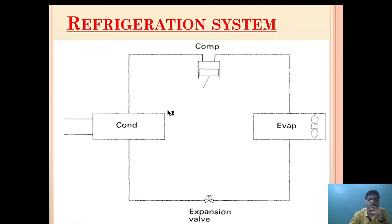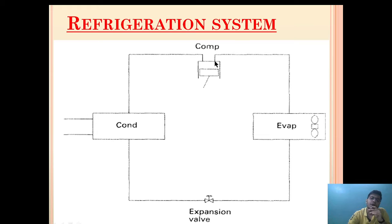We need to understand the basic concept. The whole refrigeration system is in a closed cycle. The refrigerant vapor coming out from the evaporator is compressed in the compressor. After being compressed, the temperature of the refrigerant gets raised up. As the temperature gets raised up, it is cooled down by the condenser.